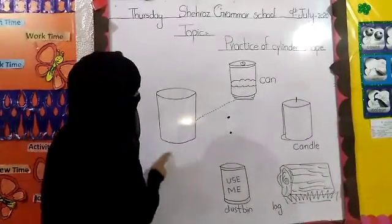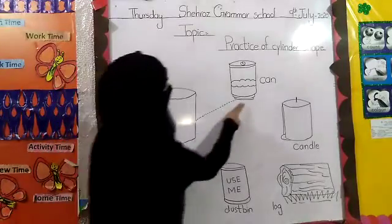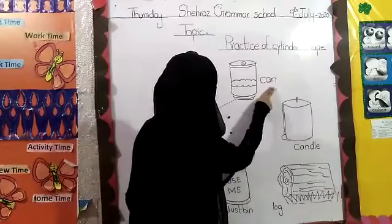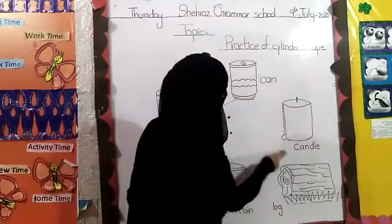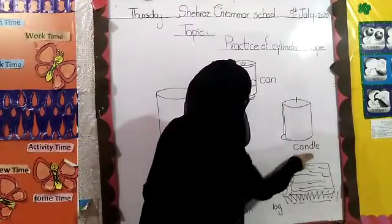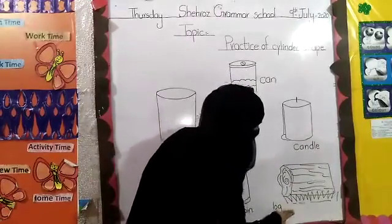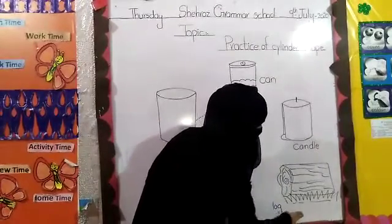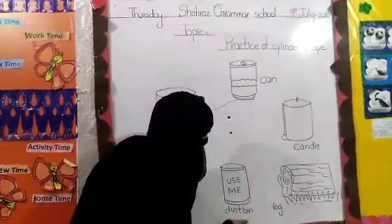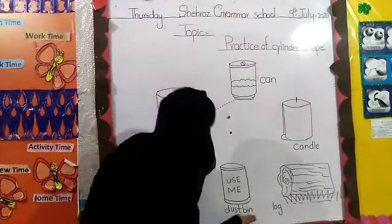This is Cylinder. And this is Can. And this is Candle. And this is Log. And this is Dustbin.